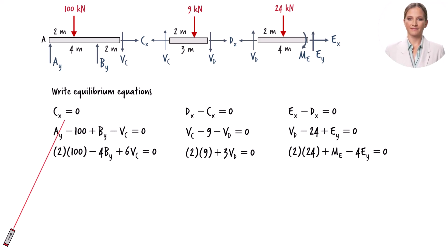Cx equals zero. We can deduce that Dx is zero from this equation. And this equation yields Ex equals zero.